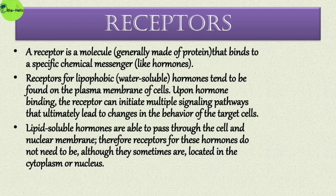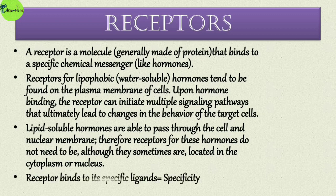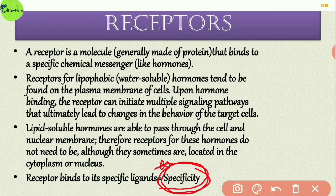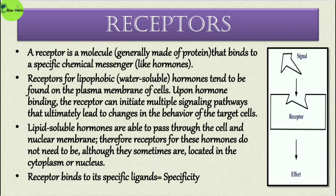In the case of liposoluble hormones, the hormones are able to pass through the cell and nuclear membrane; therefore receptors for these hormones do not need to be — but sometimes are — present in the cytoplasm or nucleus. Another very important phenomenon for receptors is receptor specificity: a specific receptor binds to its specific ligand. This receptor specificity is a very important characteristic of all receptors, and ultimately causes cellular changes.